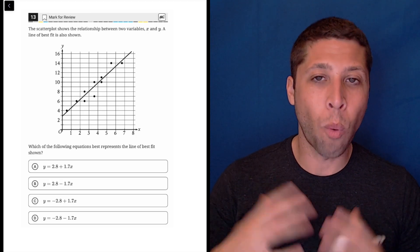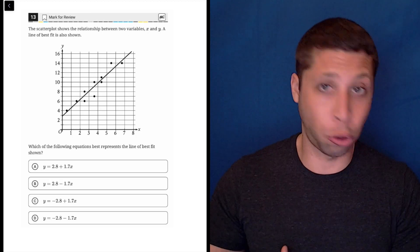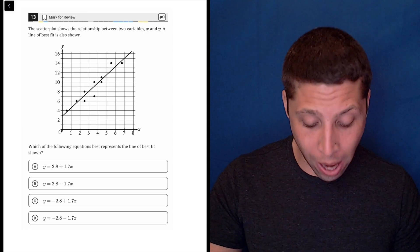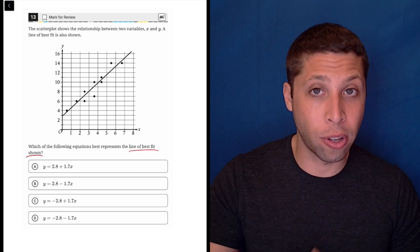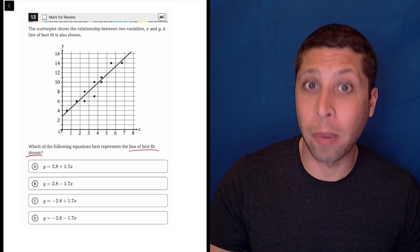This question is a great example of why we always need to look at the answer choices before we start diving into the question. The question wants us to find the line of best fit, so we're going to come up with an equation. The choices make that clear.